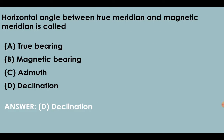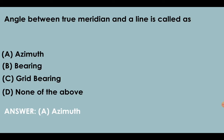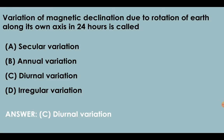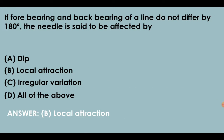Horizontal angle between true meridian and magnetic meridian is called declination. Line passing through points of equal declination are known as isogonic lines. Angle between true meridian and a line is called azimuth. Variation of magnetic declination due to rotation of earth along its own axis in 24 hours is called diurnal variation. Magnetic declination varies due to secular variation, annual variation, and diurnal variation. If forebearing and backbearing of a line do not differ by 180 degrees, the needle is said to be affected by local attraction.